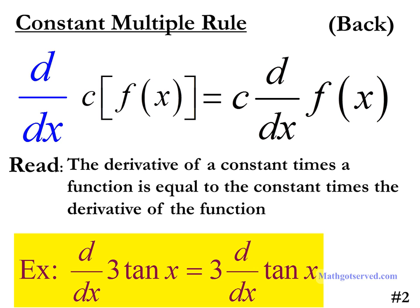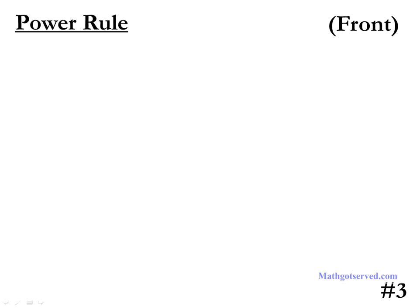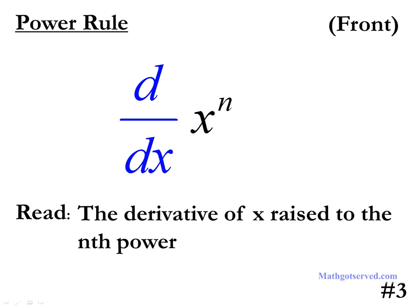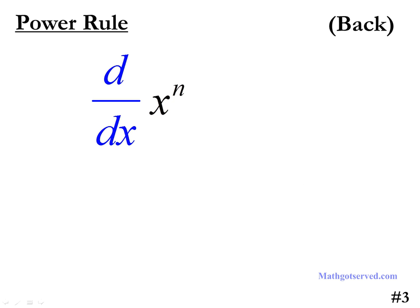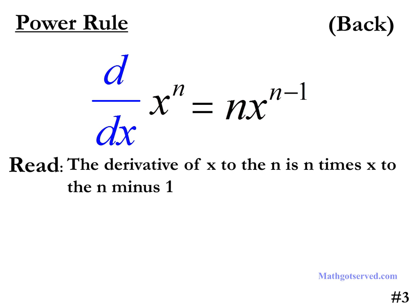Let's take a look at formula number 3. Formula 3 is the power rule. The power rule tells us that the derivative of x raised to the nth power is equal to n times x raised to the n minus 1. Basically, you take the power, bring it down, multiply the function, but you reduce the power of the term by 1. So n times x raised to the n minus 1 is the derivative of x to the nth power.